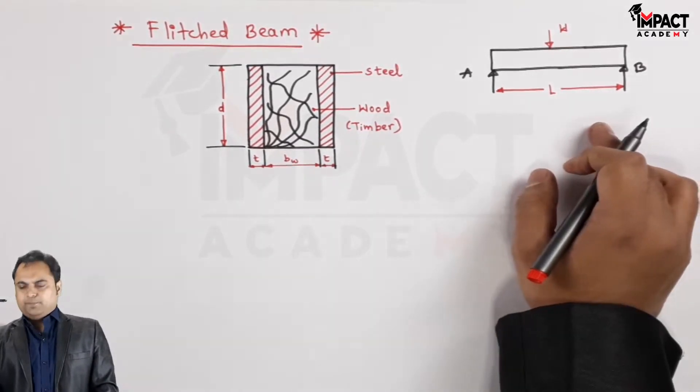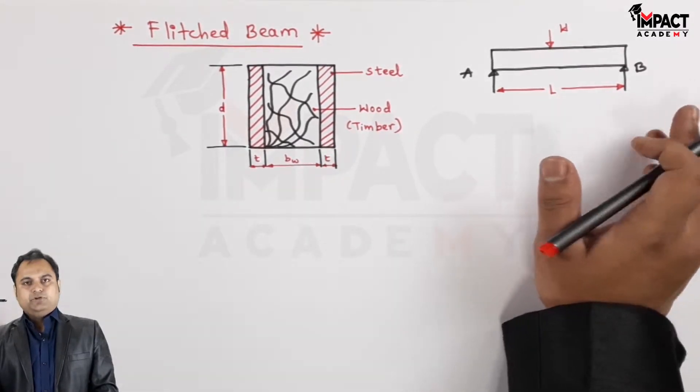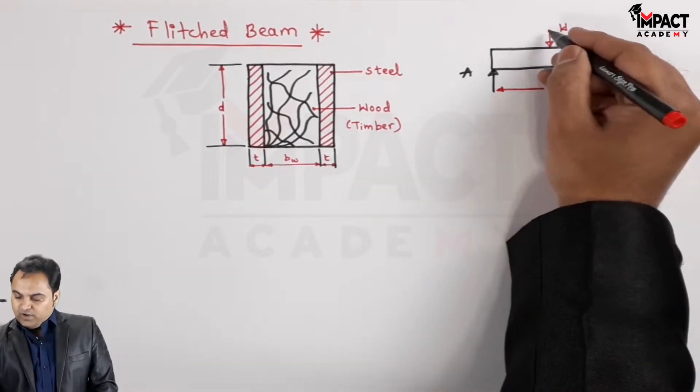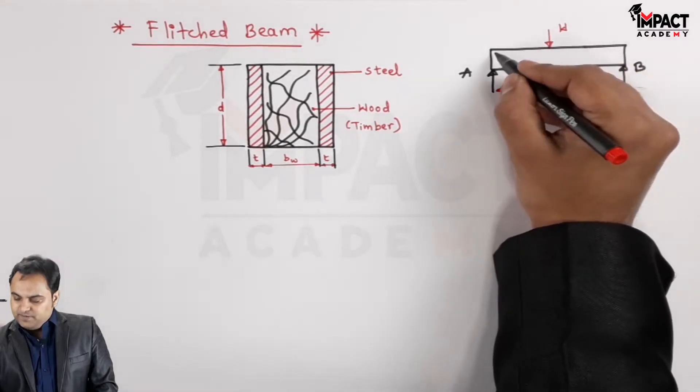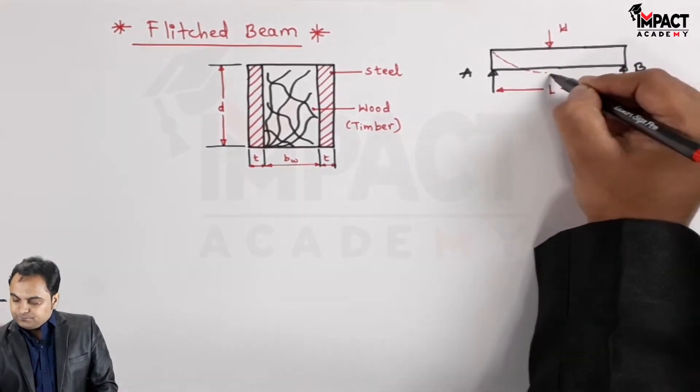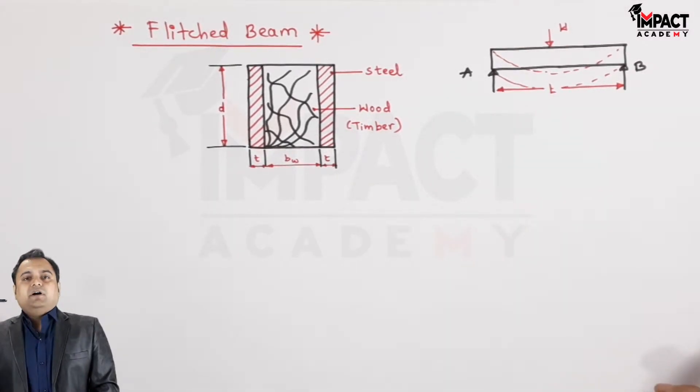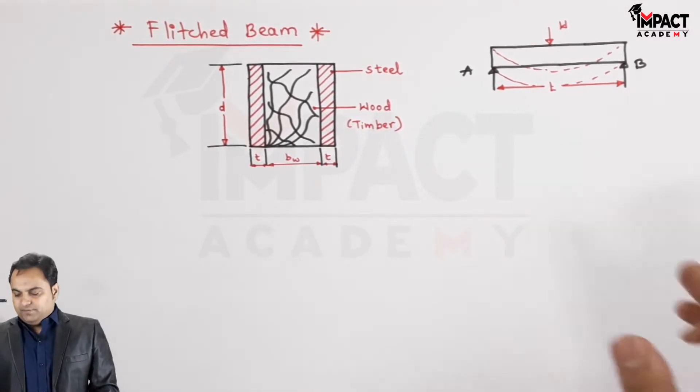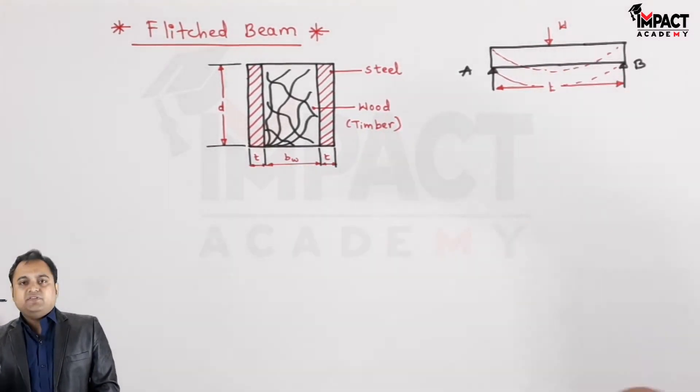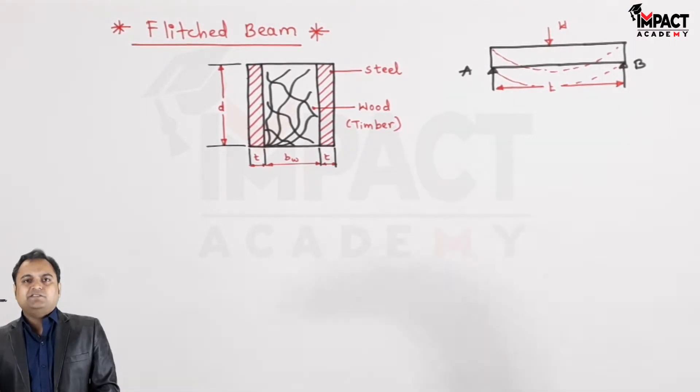Here I am assuming an example of a simply supported beam. Now under the action of this load this beam is going to bend and if a single material is used then the resistance offered by the beam would be less.